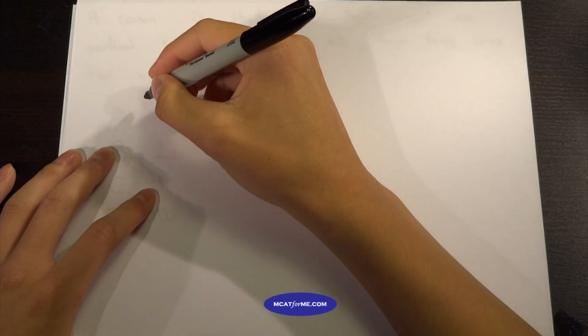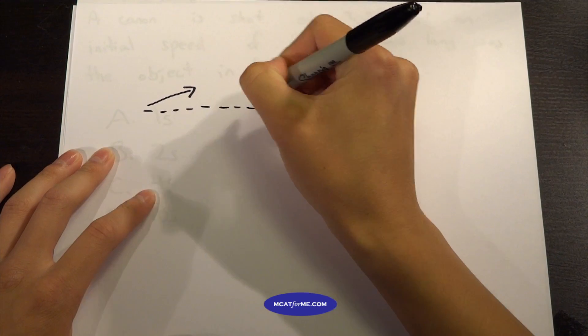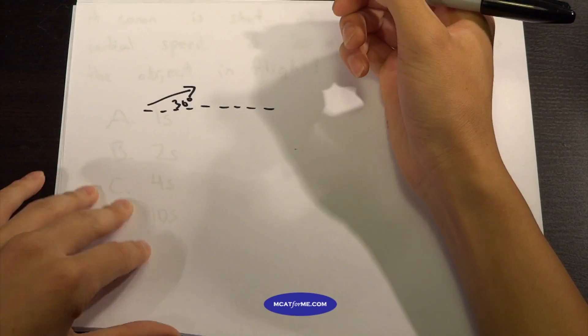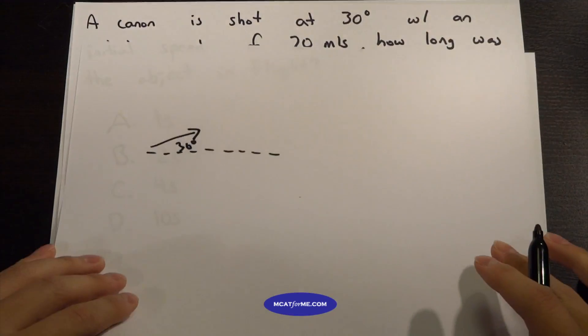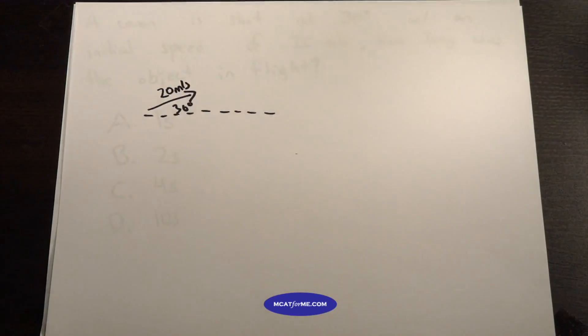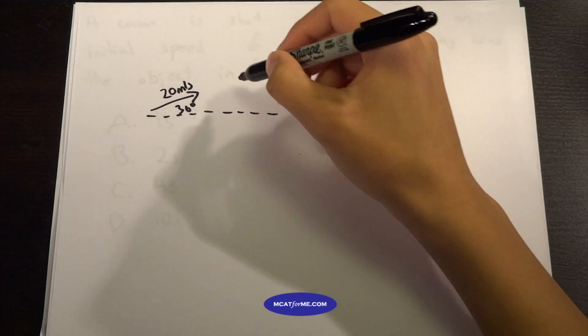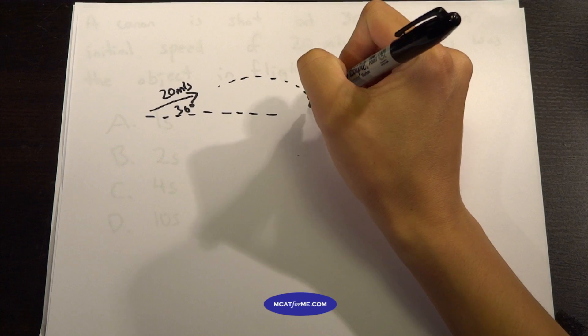So what this is saying is that we have this projectile that is shot at an angle of 30 degrees, and it says that the initial speed is 20 meters per second. All it wants us to find is the time, so the time that it takes to go all the way over here.